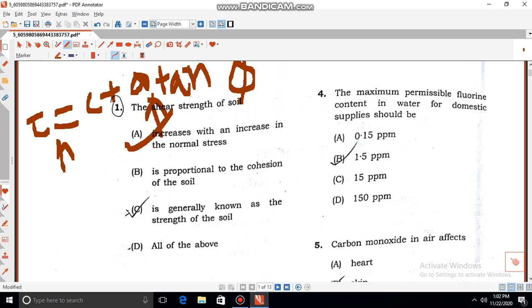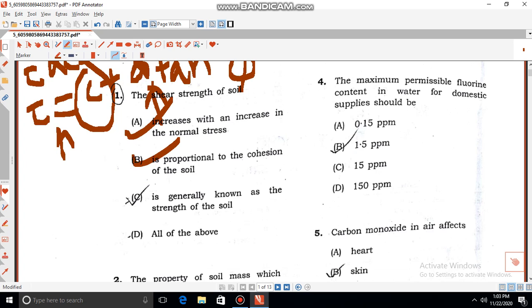Let's see the second option: it is proportional to the cohesion of the soil. The cohesion is c. From the equation, it is correctly seen that τ is proportional to c, so shear stress is proportional to cohesion. So option B is also correct. And the third option: it is generally known as the strength of the soil. The shear strength is normally the strength of the soil, so option C is also correct. So that means our correct answer is all of the above. This option is correct.